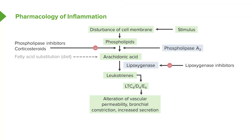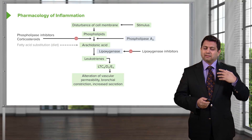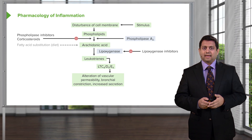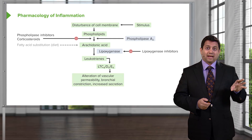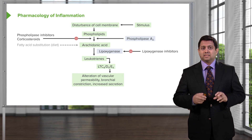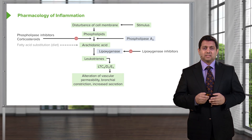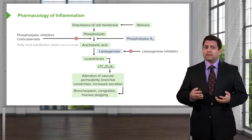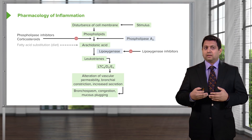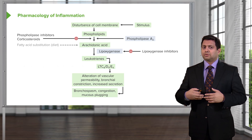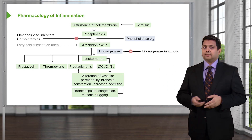Leukotrienes also cause increased secretion of mucus, so you can see how this is very relevant in asthma. Going back to asthma lectures, leukotriene antagonists are almost as effective as steroids. Bronchospasm, congestion, and mucus plugging occur with excess leukotrienes, so a leukotriene antagonist will help prevent that.